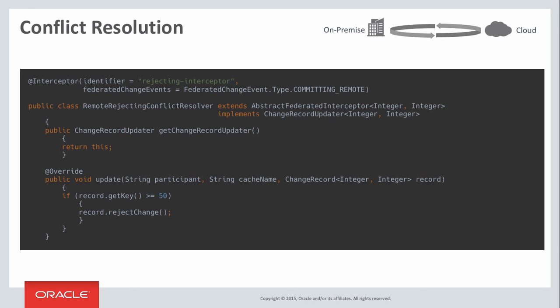Defining a live event interceptor to handle cache events is really easy. In this example, we're writing a standard annotation-based interceptor for handling a federated change event by extending the abstract federated interceptor. We're overriding the update method that's called for each change record — these are generated as part of each partition-based transaction performed against the cache. In this case, when the entry key is greater than or equal to 50, we actually reject or drop the change from being applied locally. The change record can include the local value, the previous local value, and if it's coming from another site, the values from the other site as well, giving this one method all the information necessary to make a decision about what gets committed locally. There are many options: accepting, rejecting, merging, creating new values, and so on.